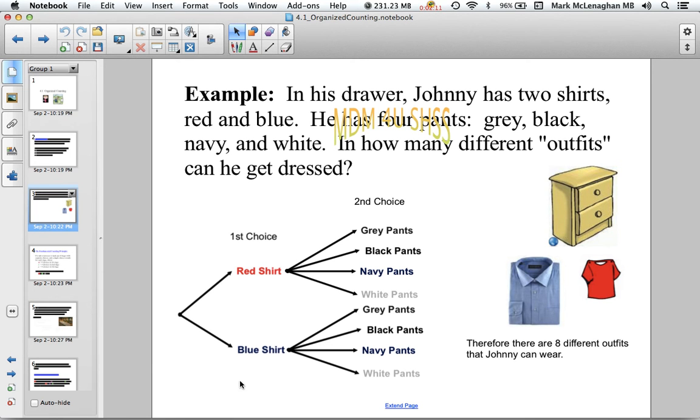With the tree diagram, notice that the branches lead to the choices. The nodes tell you that our choice has been made and lead to the next choice. Usually we read our tree diagrams from left to right, just like when we read our text.